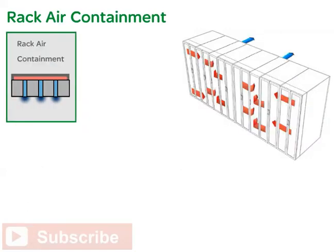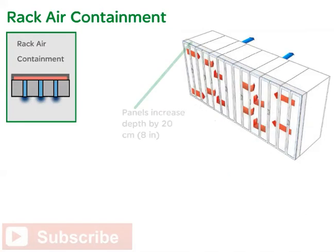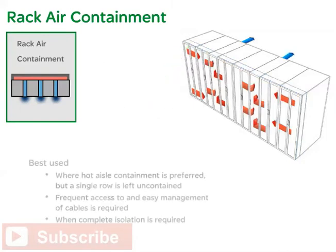Rack containment is also called rack air containment. This is similar to hot aisle containment, except that the hot exhaust air is contained using the back frame of the equipment racks and a series of panels to form a rear channel. This channel can be attached to a single IT rack or to a row of racks. The panels used to create the hot exhaust air channel increase the depth of a normal rack by 20 centimeters or 8 inches. An optional series of front panels may be used on rack containment arrangements that require complete containment of hot and cold air streams. This methodology is useful in cases where hot aisle containment is the preferred method but a single odd row is left uncontained, and when frequent access to and easy management of communication cables is required. Rack containment is also effective when complete isolation is required.